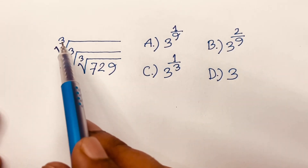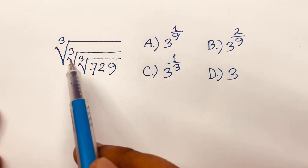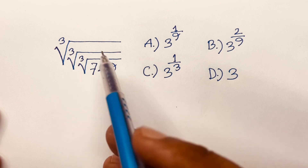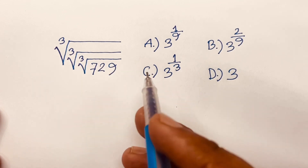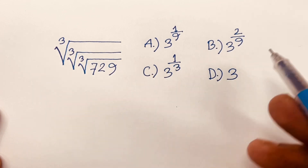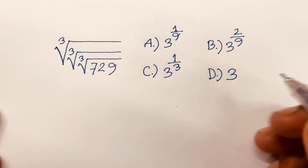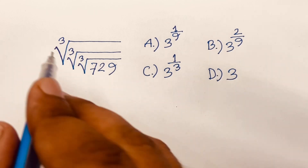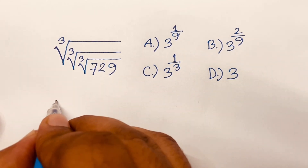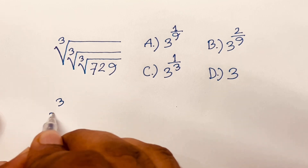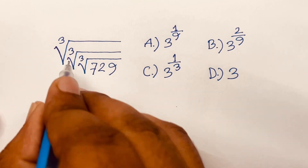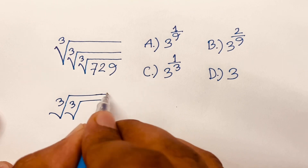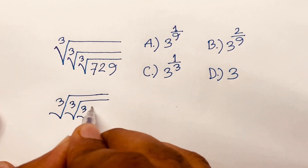How to solve 3 square root of 3 square root of 3 square root of 729. Here are 4 options, we need to find the right option. So let's start — it will be 3 square root, 3 square root, and 3 square root of 729.